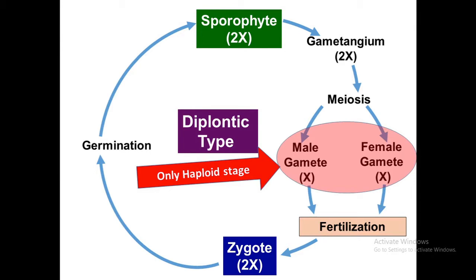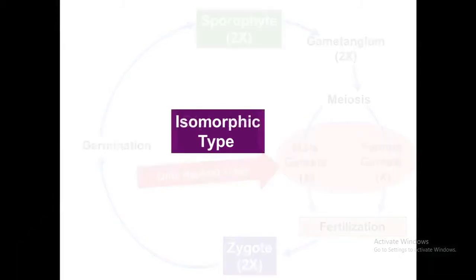If gamete-bearing gametophytic haploid plants and spore-bearing diploid sporophytic plants in a life cycle are morphologically the same, such a life cycle is known as isomorphic. If they are morphologically different, it is termed a heteromorphic type of life cycle. Common examples for the isomorphic type are Ulva, Enteromorpha, Cladophora, Dictyota, and Ectocarpus.